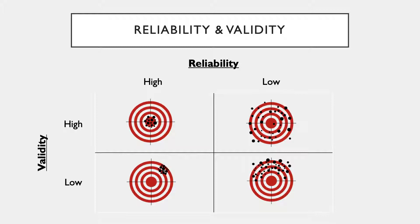In the target image, high reliability and high validity means hitting the target consistently every time — scores are closely clustered near the center. Low reliability with high validity shows scores centered around the target but scattered. Low reliability and low validity shows scores not centered around the target and also scattered. High reliability with low validity shows scores closely clustered together but clustered away from the center mark — consistent but inaccurate.